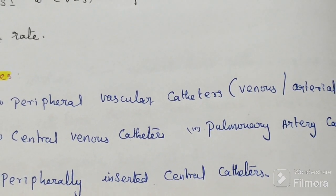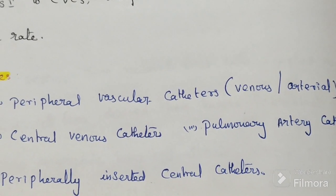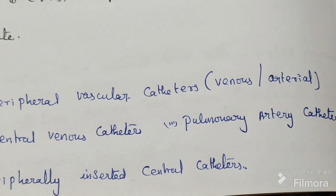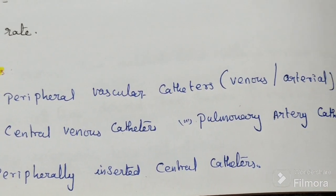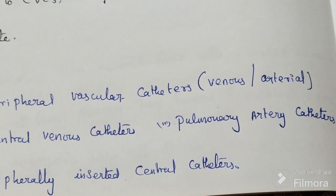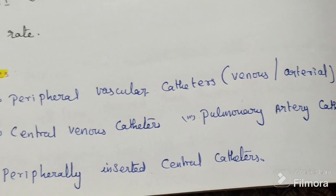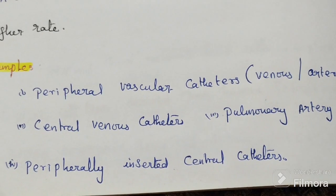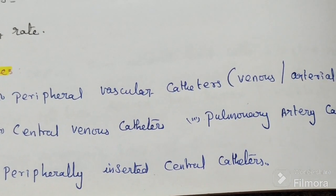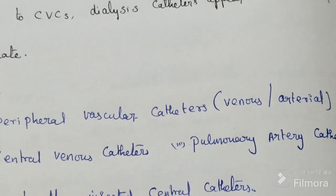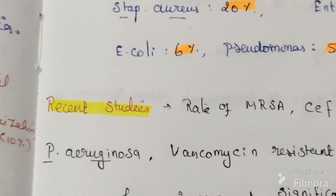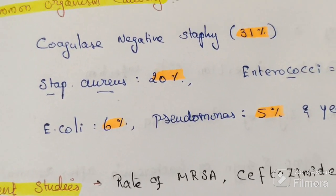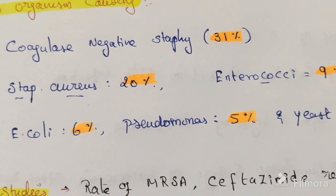Examples of intravascular devices that can cause catheter-associated bloodstream infection include: peripheral vascular catheters (venous or arterial), central venous catheters, pulmonary artery catheters, and peripherally inserted central catheters (PICC).